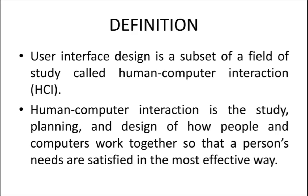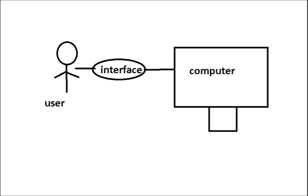For example, a user — that is, a human being — can interact with the computer using an interface. So interface is nothing but a bridge between the user and the computer. The user can use the computer using an interface. For example, the operating system is the interface.